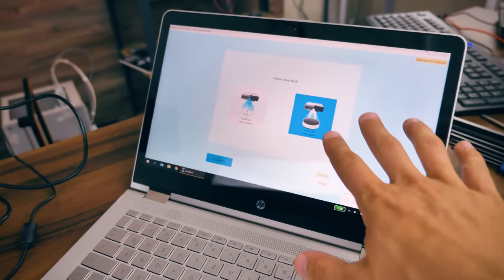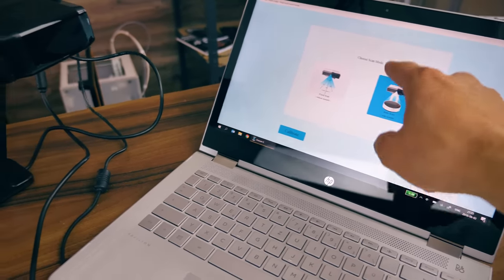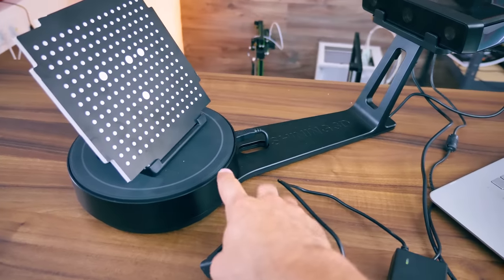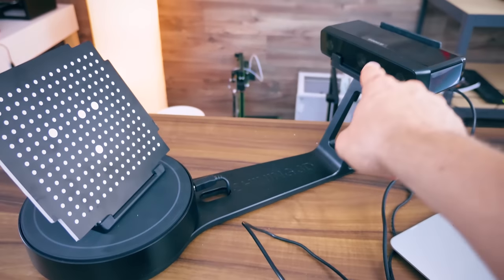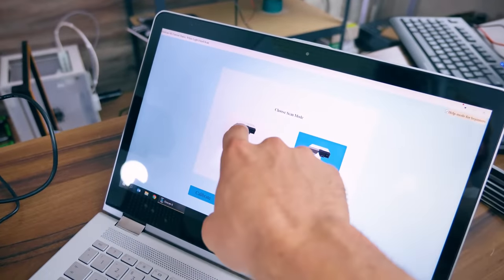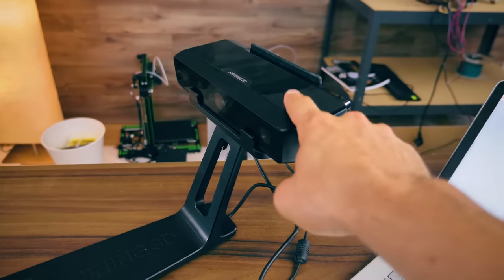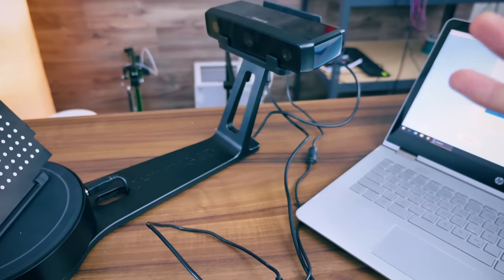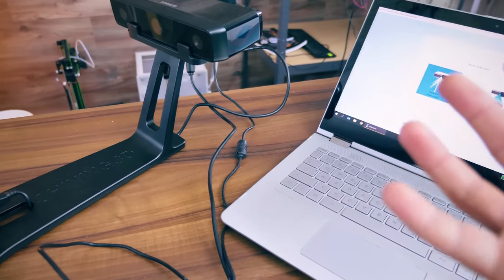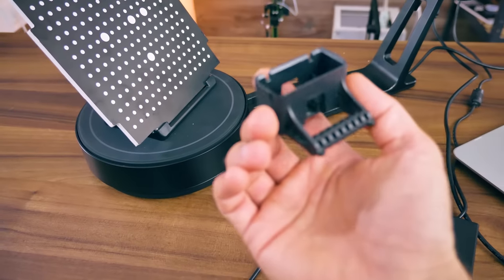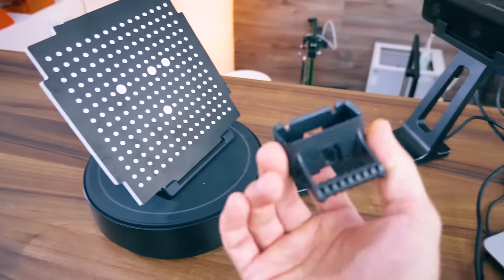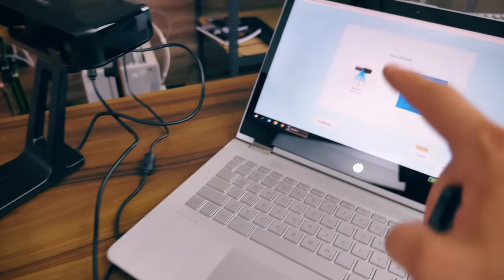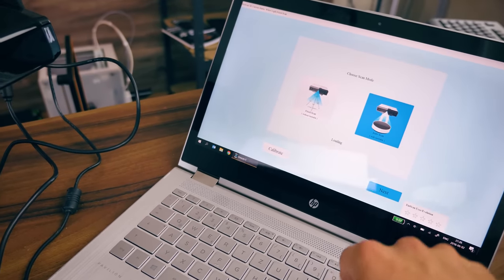So the EinScan is giving us a few different scan options here. The first one is auto scan which is exactly what we have set up here with the scanner unit right there and the turntable attached to it with the included bracket. But you can also use fixed scan where you just put this scanner head on a tripod and then move that around your object just like you would do with photogrammetry using a simple camera.